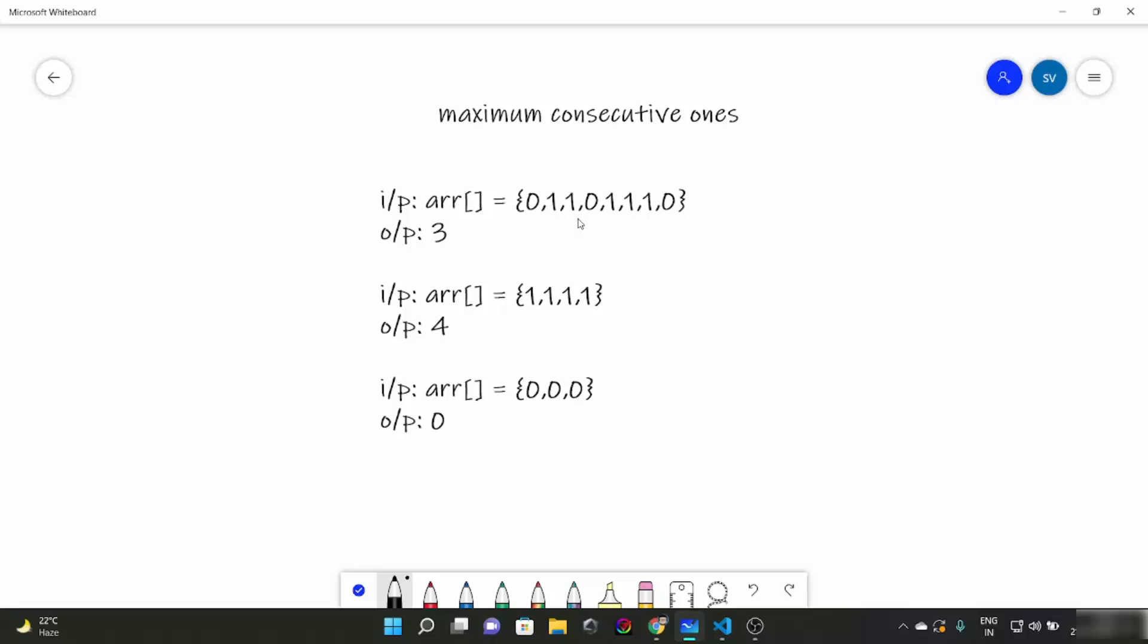For instance, in our first example there is this series of 1's, then there is this series of 1's, then there is a breakage. You have to tell the maximum consecutive 1's. See here how many 1's are there? Two. And here how many 1's are there? Three. So maximum consecutive 1's is 3 and the output is 3.